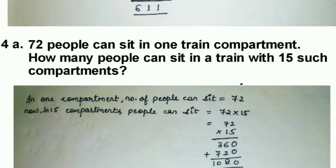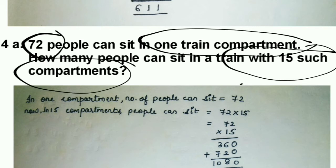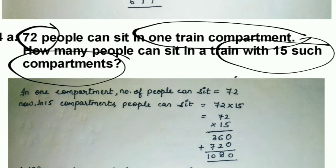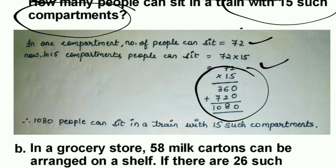Question 4 word problem: 72 people can sit in one train compartment. How many people can sit in a train with 15 such compartments? In one compartment 72 people can sit. For 15 compartments: 72 times 15 equals 1080. So 1080 people can sit in a train with 15 compartments.